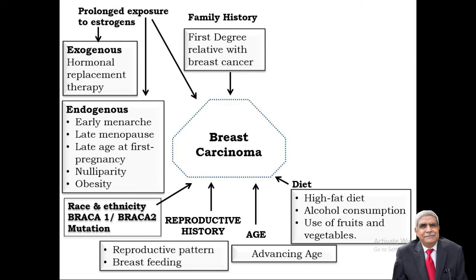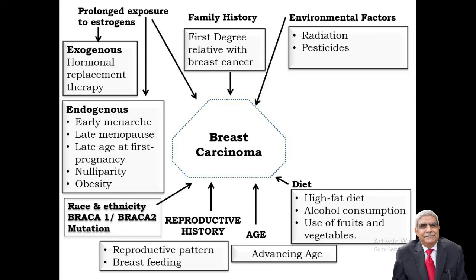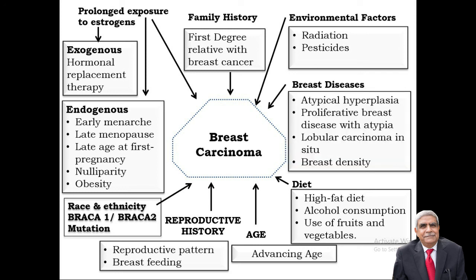Family history is another important factor. First-degree relatives (mother, sister, or daughter) have double the risk of developing breast cancer. First two-degree relatives increase the risk fivefold. Environmental risk factors include radiation exposure as therapy on the chest wall for treatment of lymphoma or from nuclear plant accidents. Extensive use of pesticides has also increased the risk. Breast diseases like atypical lobular or ductal hyperplasia, lobular carcinoma in situ, ductal carcinoma in situ, or increased breast density also increase the risk of breast carcinoma.